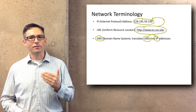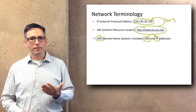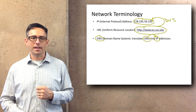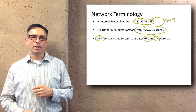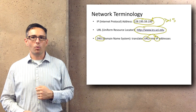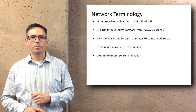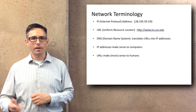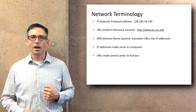IP stands for Internet Protocol. In version 4 of that protocol, an address is listed as four numbers in a row between 0 and 255. For example, www.ics.uci.edu might map to 128.195.59.193. IP addresses make sense to computers, but URLs make more sense to humans, and so the domain name system is an international system for translating human-readable URLs into network numbers that computers can use for routing packets around the Internet.